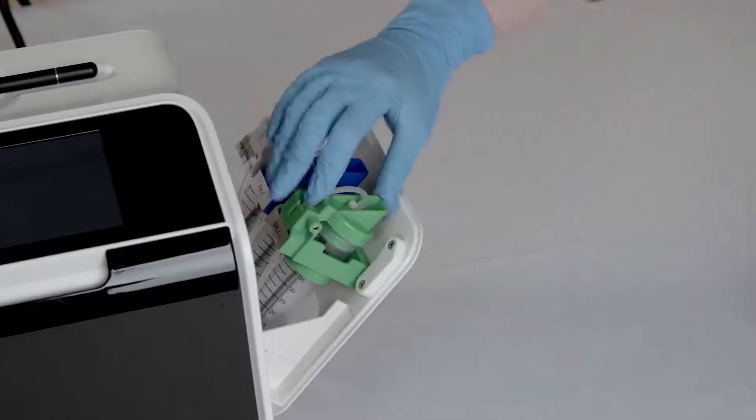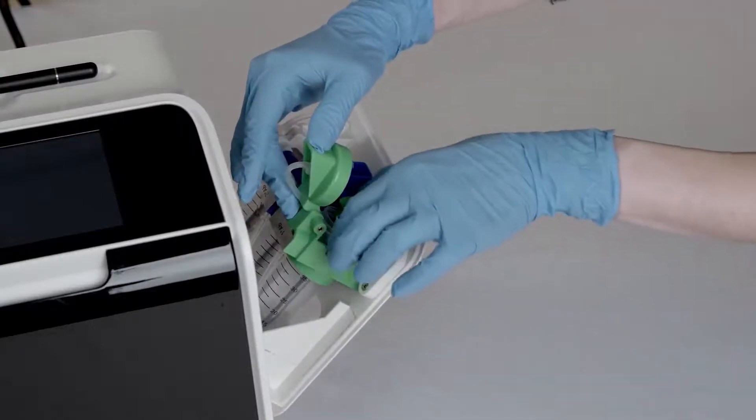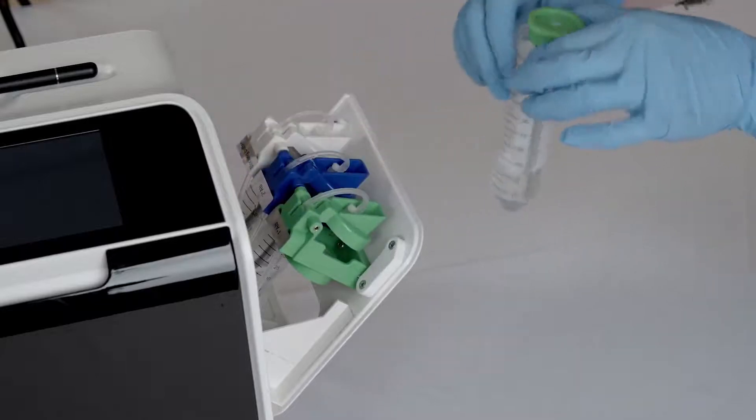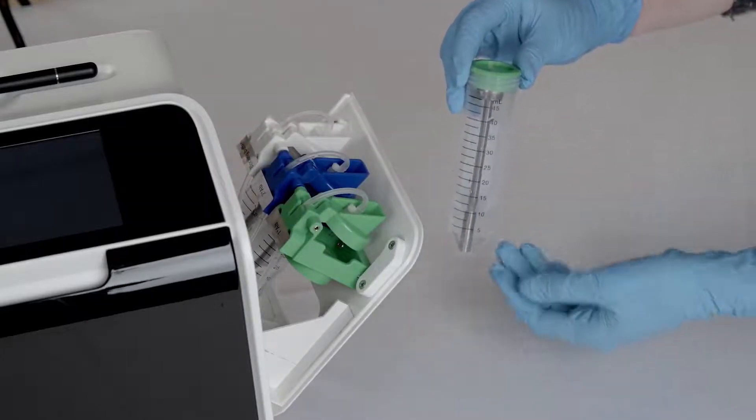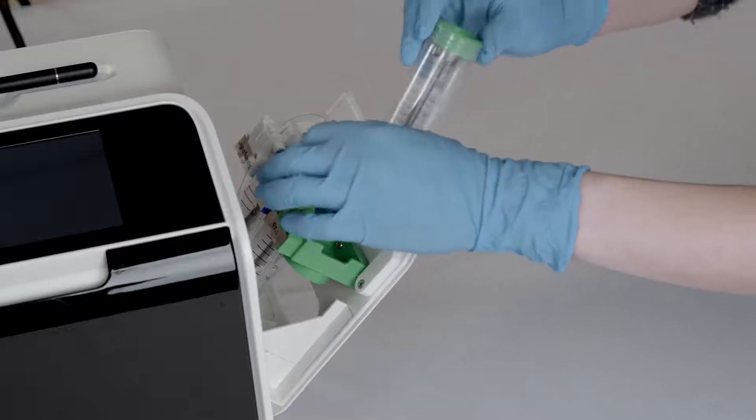On the side of the instrument, pull out the cartridge and load the blocking buffer, primary antibody, and secondary antibody reagents. The minimum volume requirement for each reagent is 10 ml.